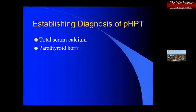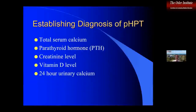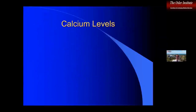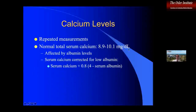Establishing the diagnosis starts with the calcium — repeat studies to confirm that both are elevated. Other tests you need are the calcium levels and parathormone levels, making sure they don't have renal failure through the creatinine level, vitamin D level, and finally 24-hour urine calcium to rule out FHH. Normal total serum calcium is within the standard range depending on your institution or laboratory, and is affected by albumin levels. With low albumin, you need to correct using the correction formula, since albumin carries calcium.